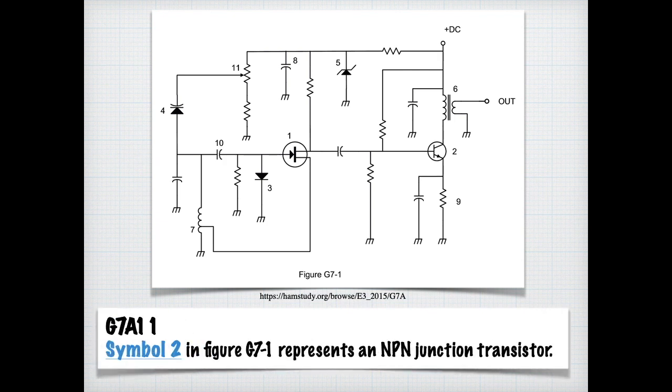And if you recall from the technician class or earlier lessons, NPN, you can remember NPN not points in, not pointing in. If the arrow is not pointing in, it's an NPN. If it's pointing outward, it's a PNP. So for the exam, just know that symbol 2 in figure G7-1 represents an NPN junction transistor.